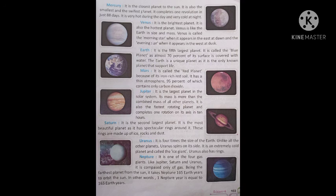Neptune: It is one of the four gas giants. Like Jupiter, Saturn and Uranus, it is composed only of gas. Being the farthest planet from the sun, it takes Neptune 165 Earth years to orbit the sun. In other words, one Neptune year is equal to 165 Earth years — ek Neptune varsh 165 prithvi varshon ke barabar hai.